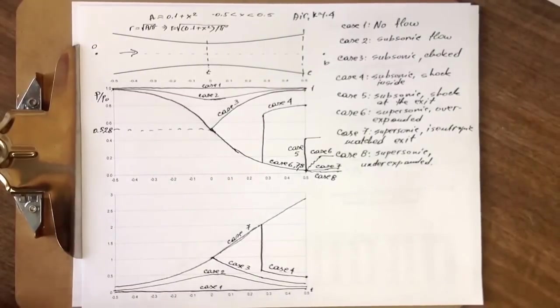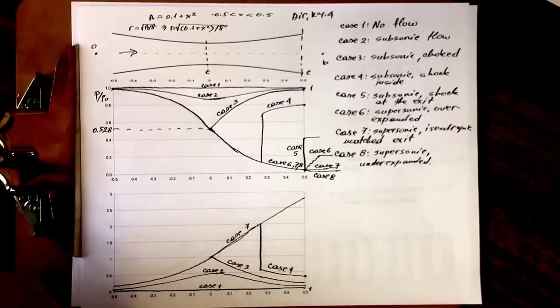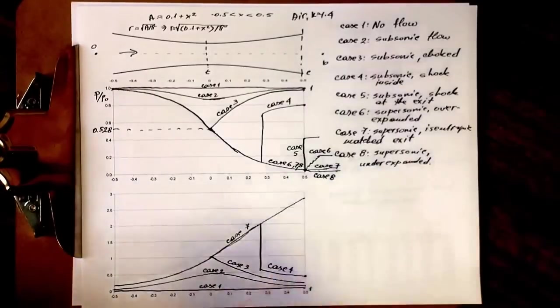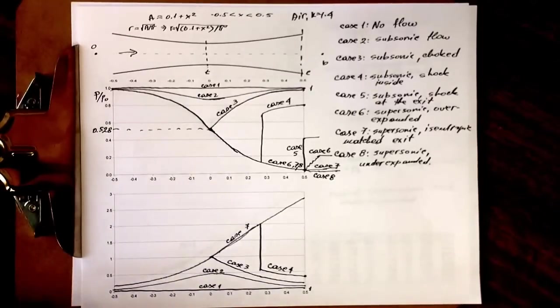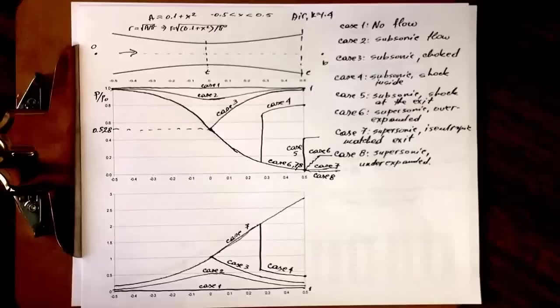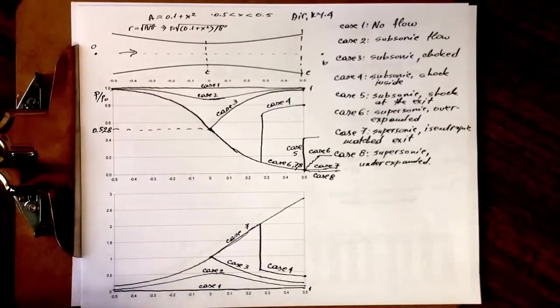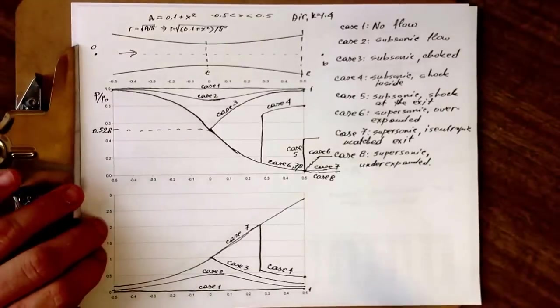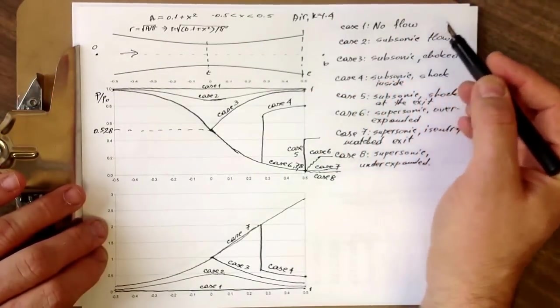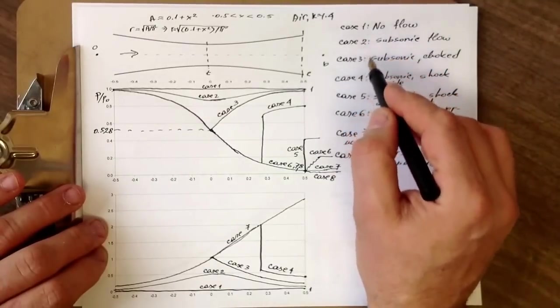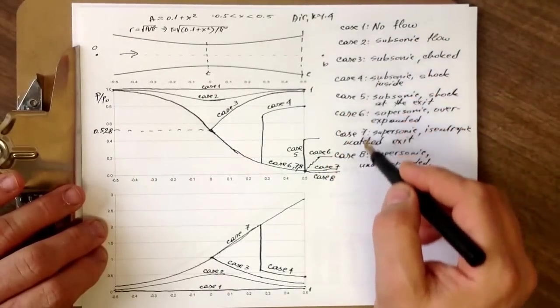Hello and welcome to the third part of the converging diverging nozzle flow analysis. In the first part, we outlined the eight cases, the eight characteristic flow regimes that the flow can assume in the nozzle. To remind you, it starts with case one with no flow, zero velocity, and goes gradually by reducing the back pressure all the way down to case eight.